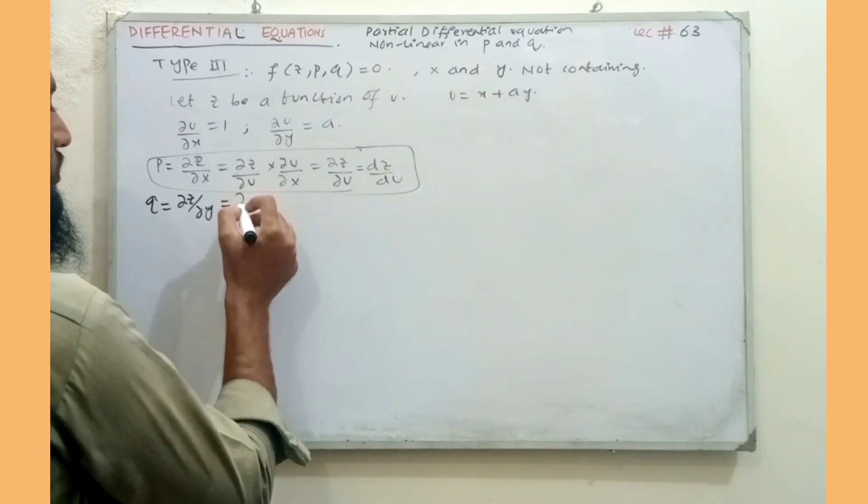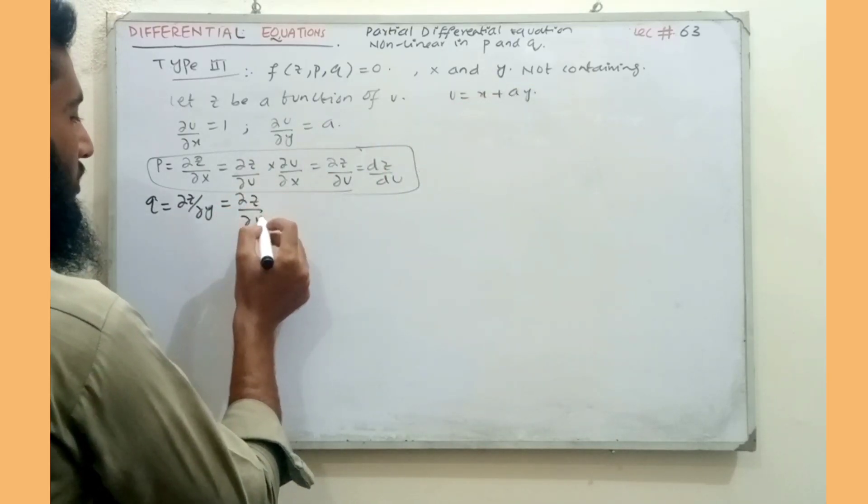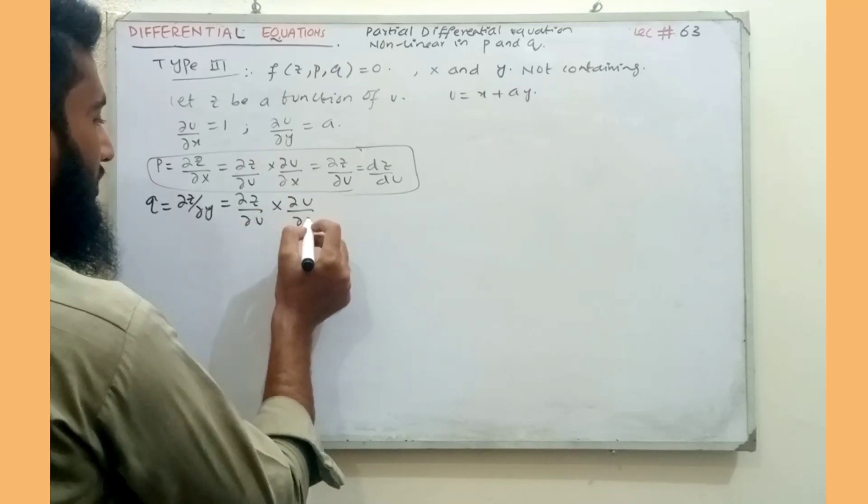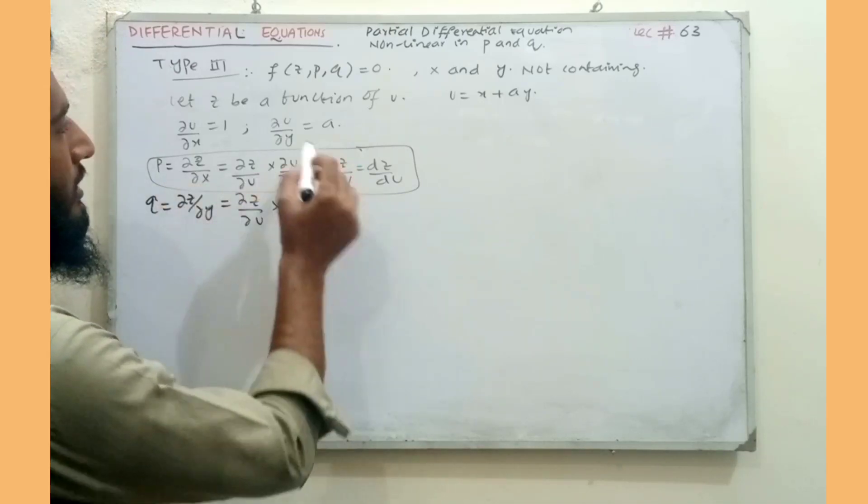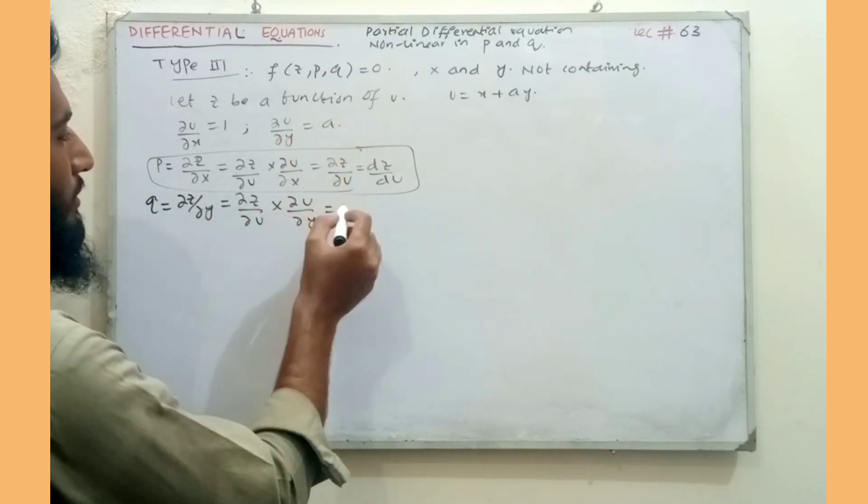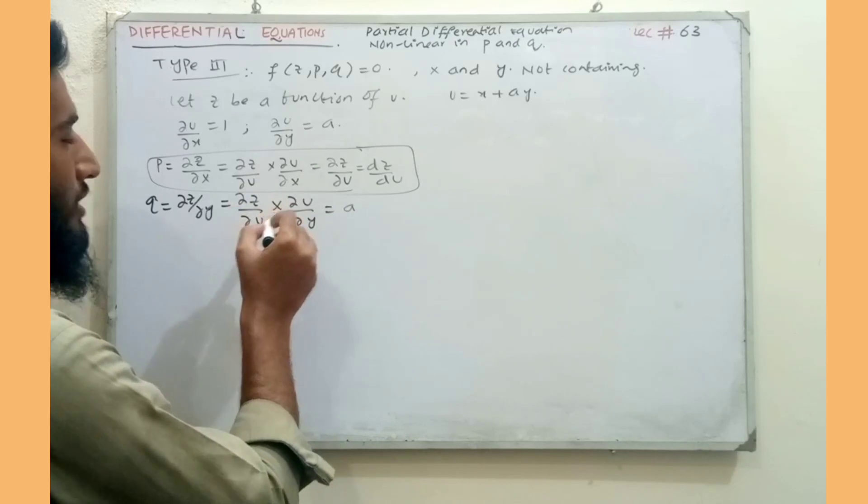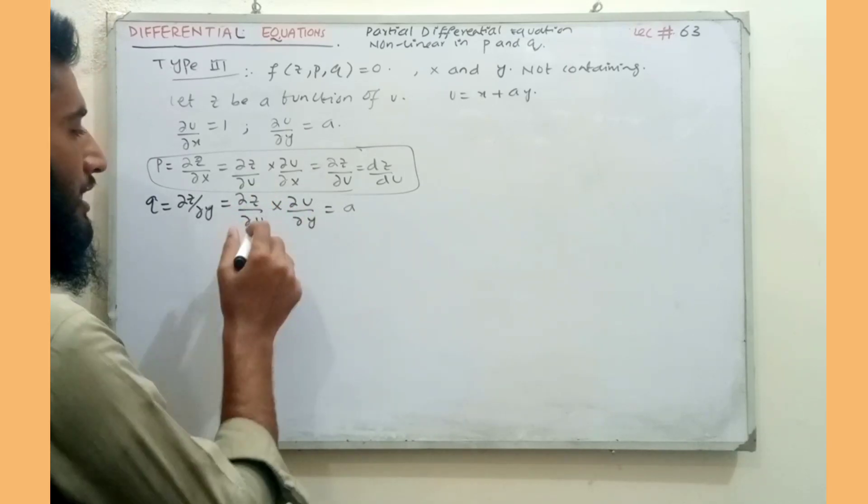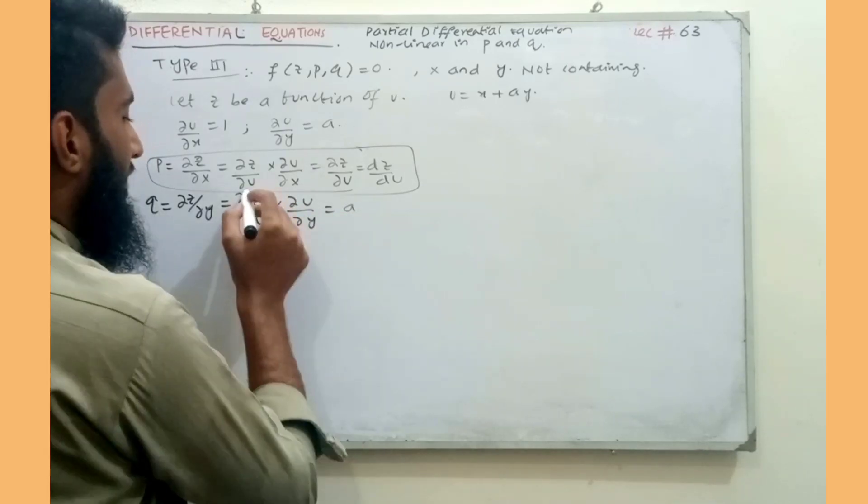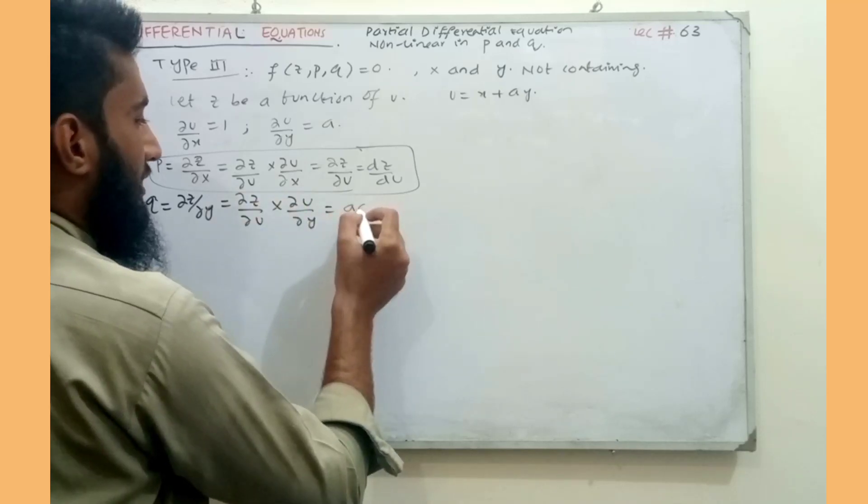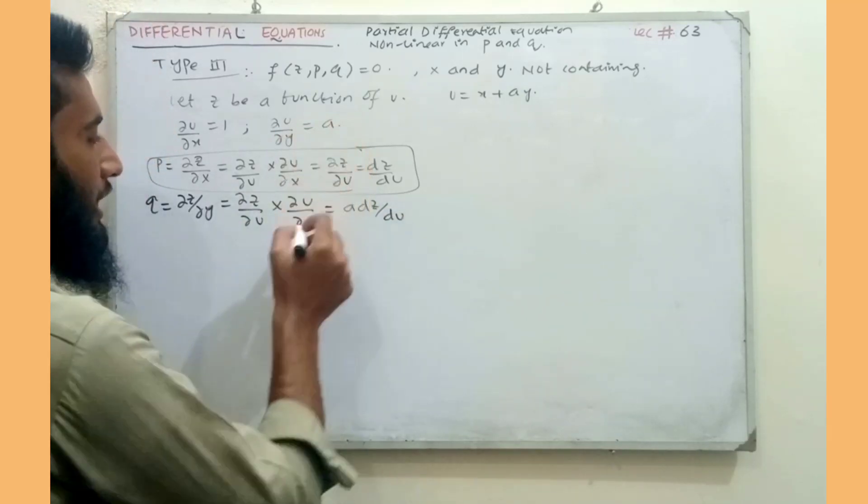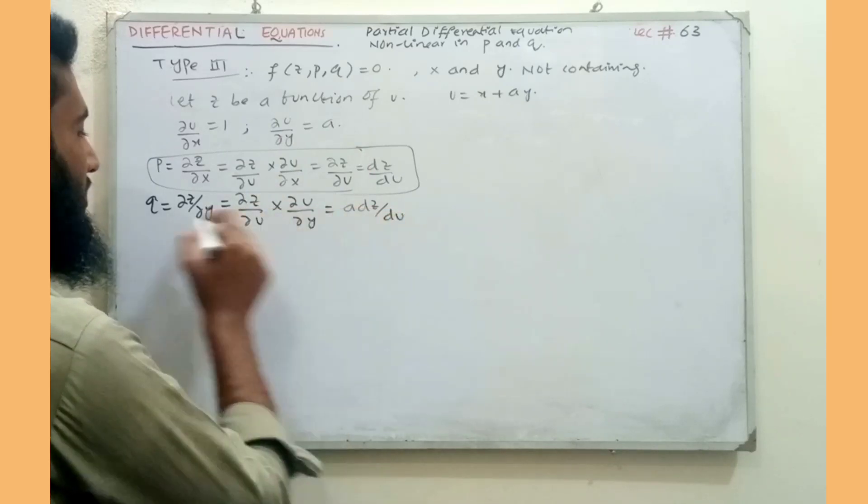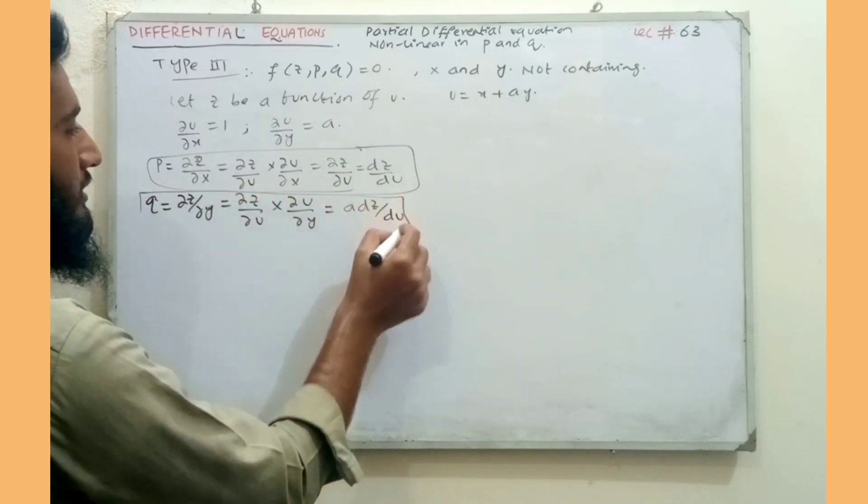For Q, we have partial z upon partial y. Using chain rule, partial z upon partial u times partial u upon partial y. I have calculated partial u upon partial y equals a. So partial z upon partial u times a. Therefore Q value is a times dz by du.